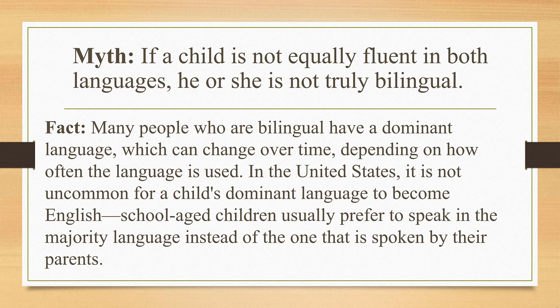Myth number seven: if a child is not equally fluent in both languages, he or she is not truly bilingual. The fact is, many people who are bilingual have a dominant language, which can change over time depending on how often the language is used. In the United States, it's not uncommon for a child's dominant language to become English, as school-aged children usually prefer to speak the majority language instead of the one spoken by their parents.